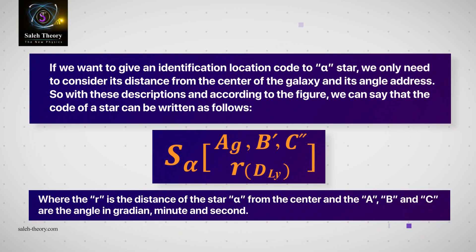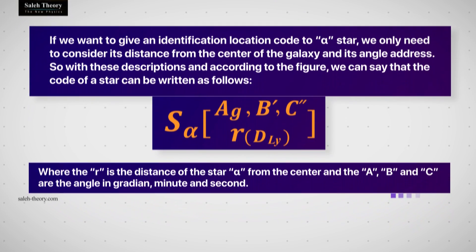If we want to give an identification location code to alpha star, we only need to consider its distance from the center of the galaxy and its angle address. So with these descriptions and according to the figure, we can say that the code of a star can be written as follows: where the r is the distance of star alpha from the center and the A, B, and C are the angle in gradient, minute, and second.